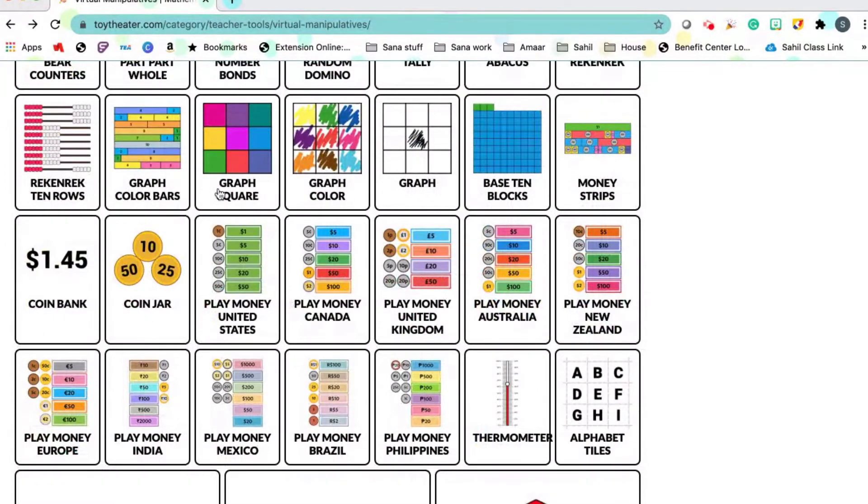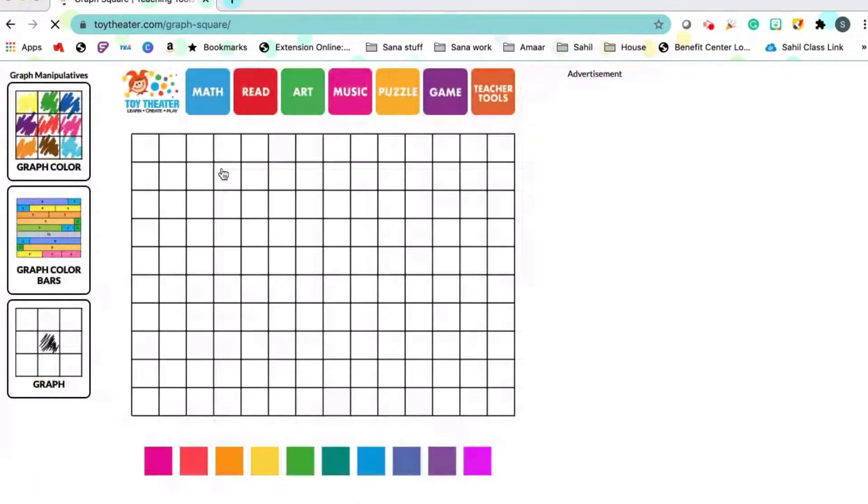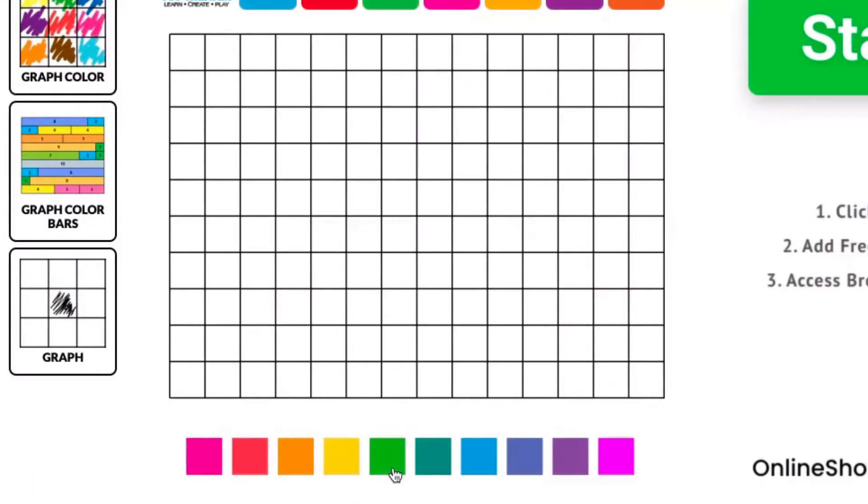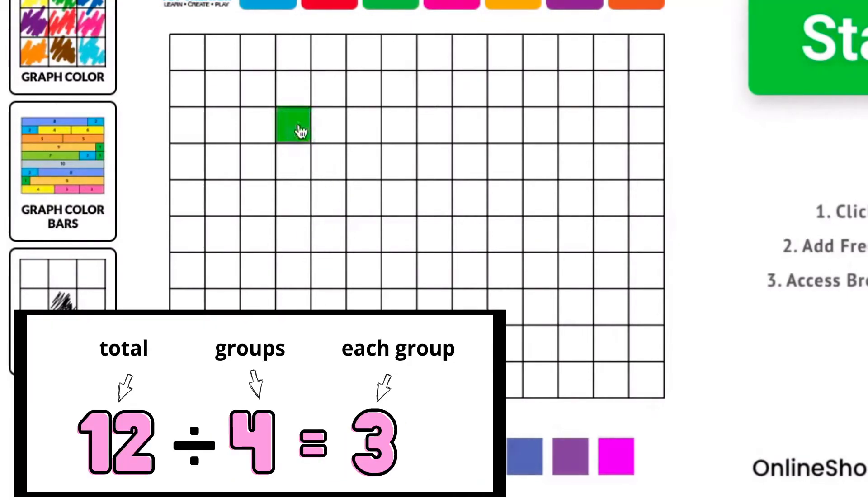Let's create an array. So 12 divided by 4 equals 3. We're first going to make 4 groups. We then are going to put 3 in each group. Since I already have the 1, I'm just going to add 2 more in each row.